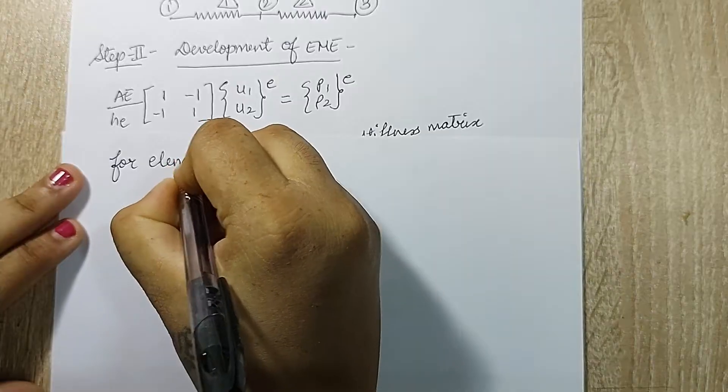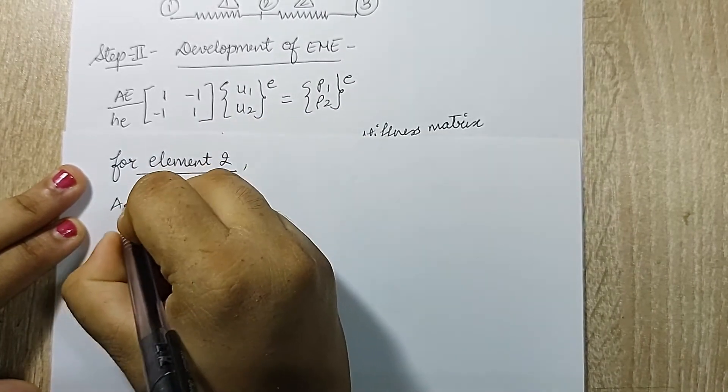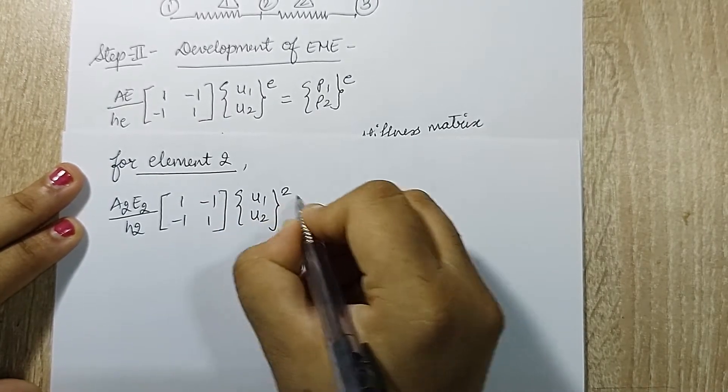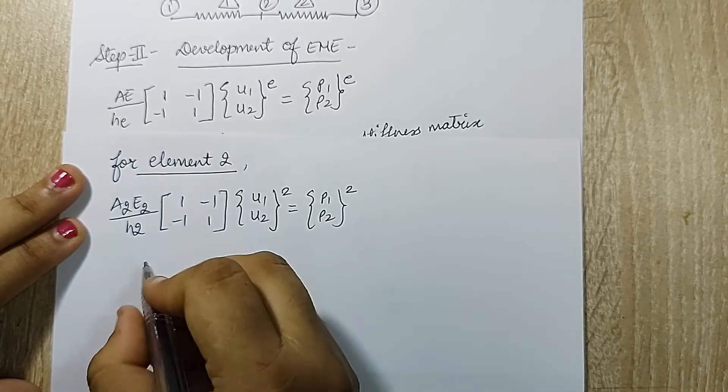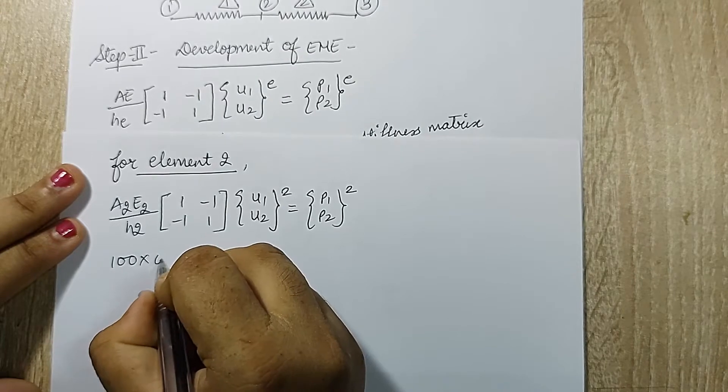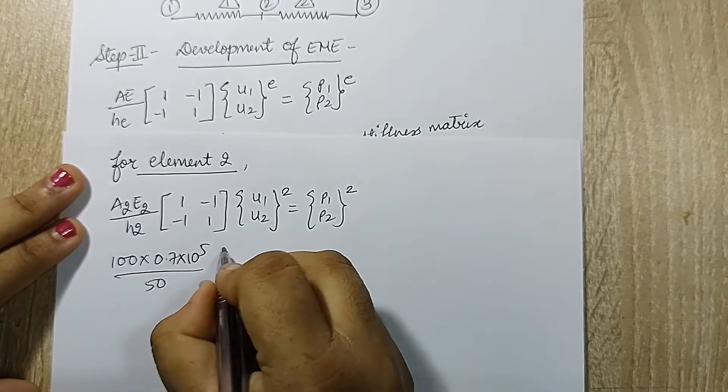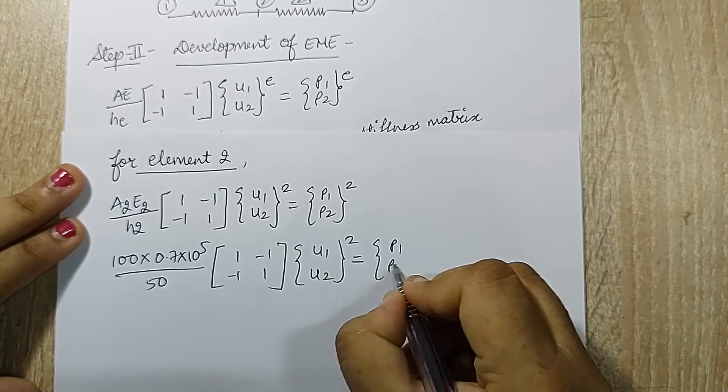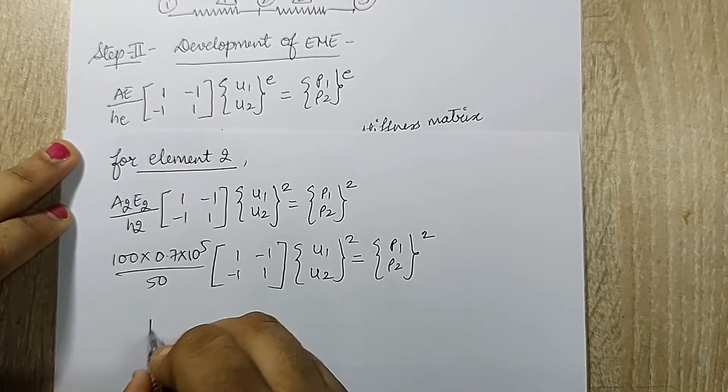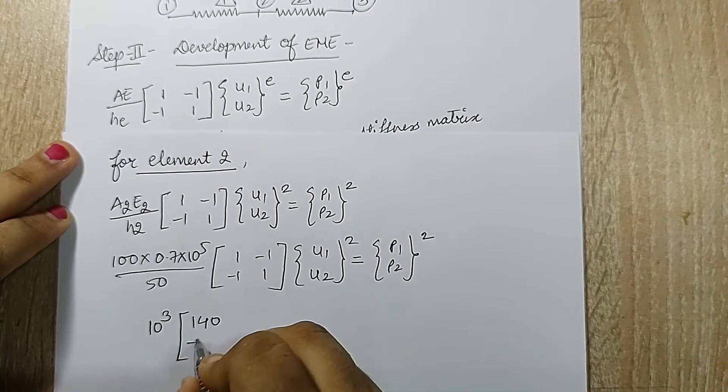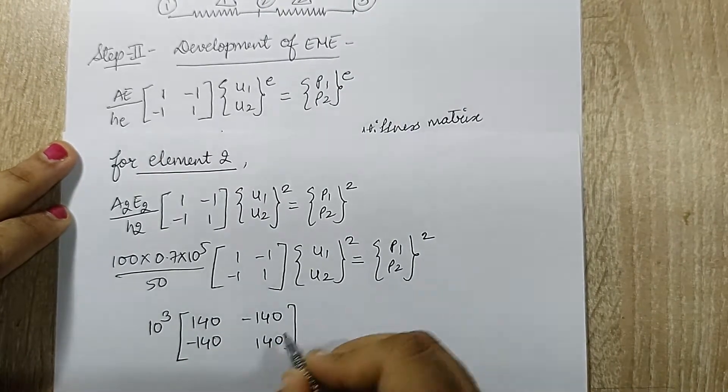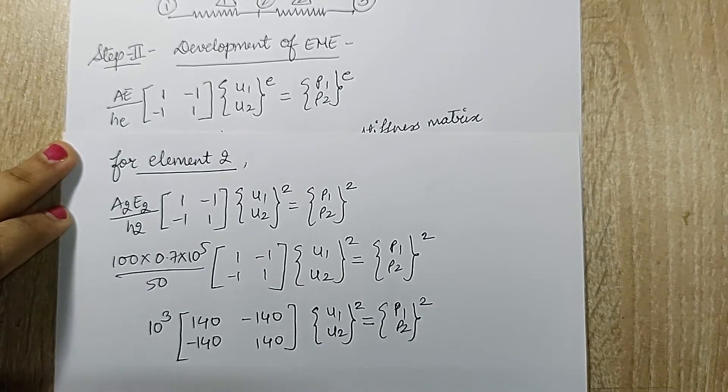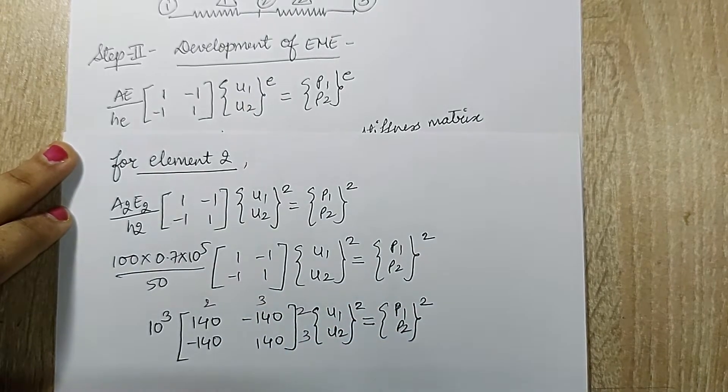Next, I will write the eme for element 2. For element 2, a2 e2 upon h2. Once I substitute, I will get 100 into 0.7 into 10 raised to 5 upon 50. On solving this I get 10 raised to 3 outside and the term is 140 which is to be multiplied inside. Element 2 is between node 2 and 3.